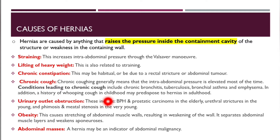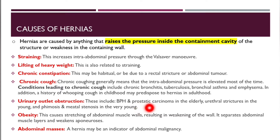Urinary outlet obstruction — for example, benign prostatic hyperplasia and prostatic carcinoma in elderly men, urethral strictures in young children, and phimosis and meatal stenosis in very young children. Obesity causes stretching of abdominal walls, resulting in weakening of the wall; it separates the abdominal muscle layers and weakens the aponeurosis.